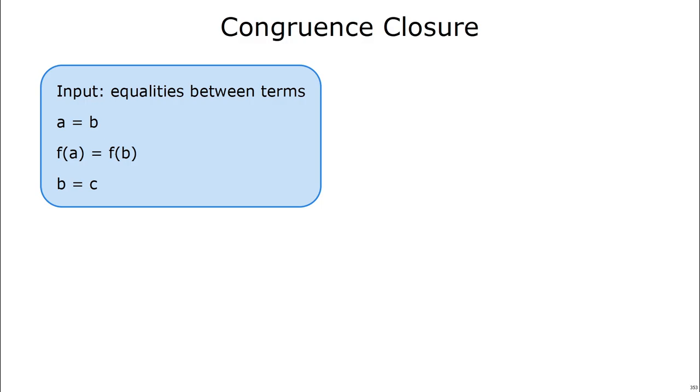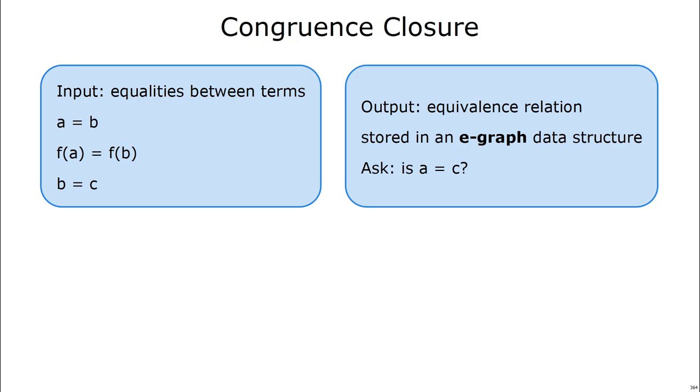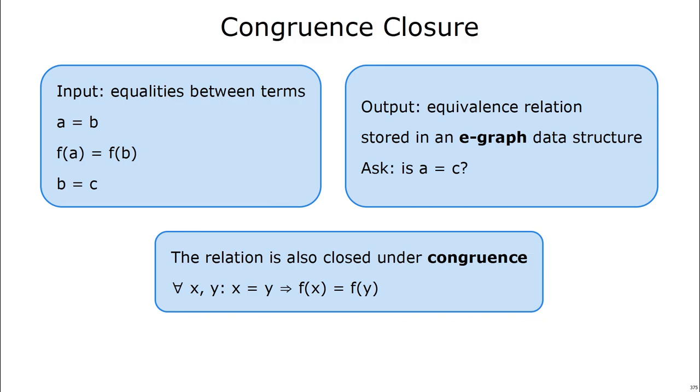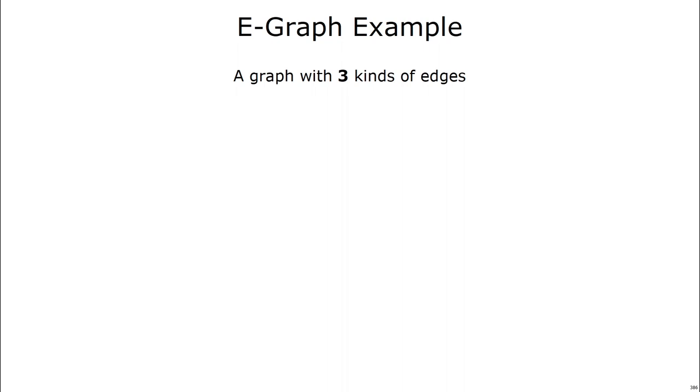All right, so what is congruence closure? Well, I said earlier that solvers use it to decide what things are equal to what. In particular, it's an algorithm that takes equalities between terms like a equals b, b equals c, and f of a equals f of b, and it outputs an equivalence relation on these terms stored in an e-graph data structure. And so once we have this e-graph data structure, we can now ask questions like, is a equal to c? And it'll say yes in this case. Importantly, this relation is also closed under what's called congruence. That's the property that for all x and y, if x equals y, f of x is also equal to f of y in the relation. People also call this closed under substitution, because you can substitute y in for x, and f of x will be equal to f of y.